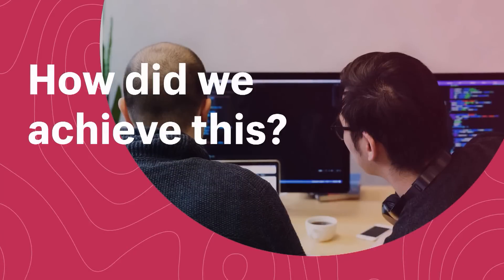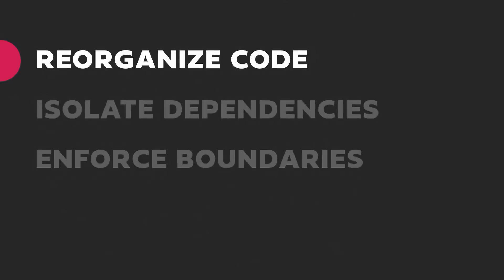This all sounds like a nice idea, but what does it mean in practice? The approach we took can loosely be broken down into three steps: reorganizing our code, isolating the dependencies, and then enforcing the boundaries between them. I want to ensure that no one's hopes are artificially gotten up — it was definitely very challenging. We at Shopify have had a lot of very smart people working on this for two years now, and while we have definitely seen a lot of improvement, we still have a ways to go.